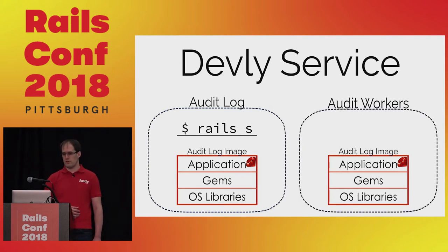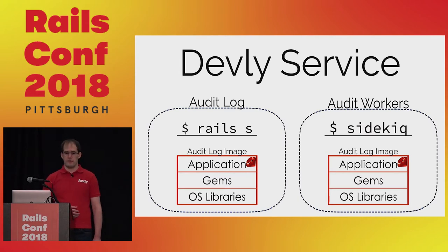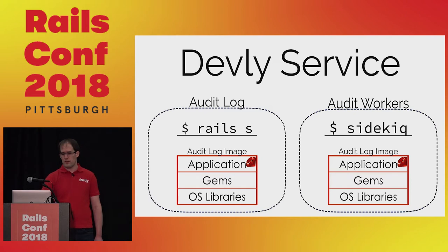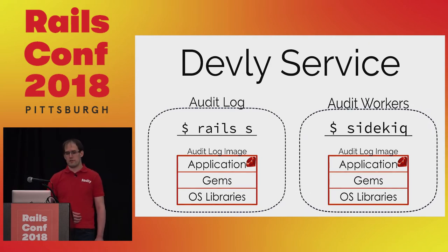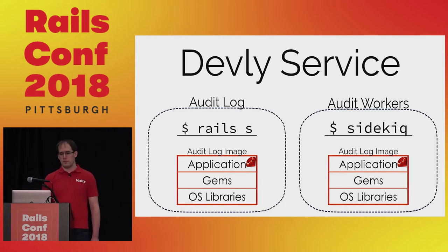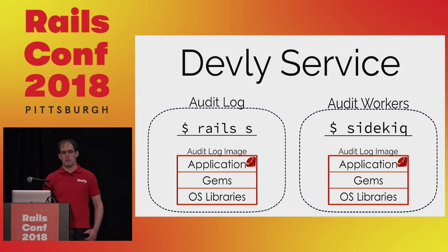We create the audit workers service, but we run the Sidekiq command instead of the Rails server command. Then we can start up the audit log API service, which only runs the Rails server, and when we start the audit worker service, it only runs the background jobs. This separation helps make development more accessible because the logs are separate. We can also test our audit workers in complete isolation from the API.